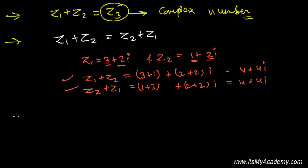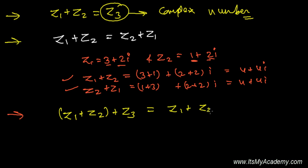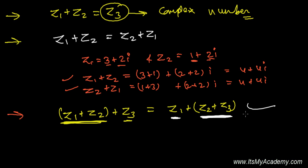Addition of two complex numbers also follows the associative law, like (Z1 plus Z2) plus Z3 is the same as Z1 plus (Z2 plus Z3). So first adding the first and second term and then the third is exactly the same as adding the first term to the sum of the second and third.